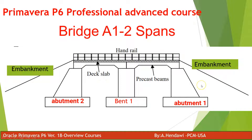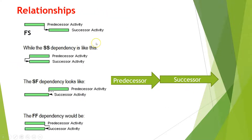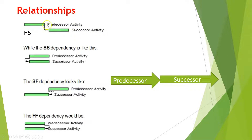Before going into the details, let's define relationships. In P6 you have four relationship types: finish to start, start to start, start to finish, and finish to finish. You also have two key terms: predecessor and successor. Finish to start means the successor activity will start after the predecessor activity is completed.